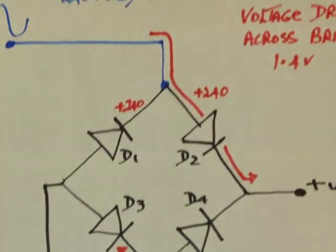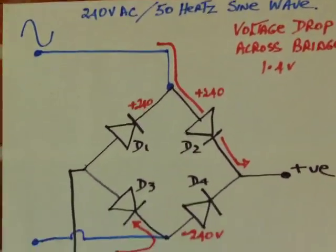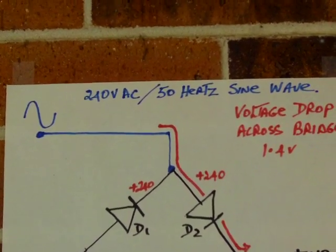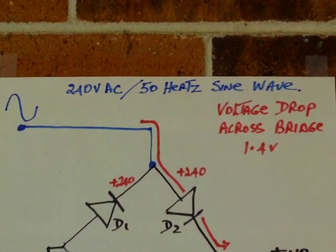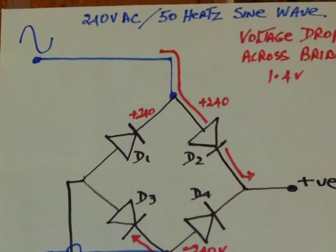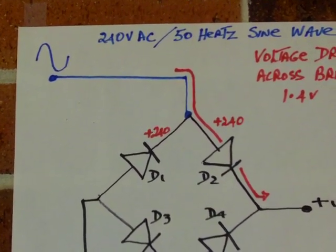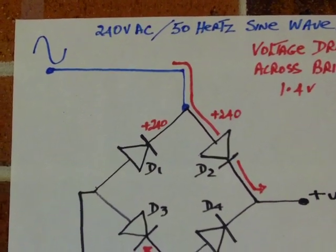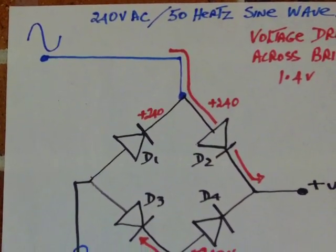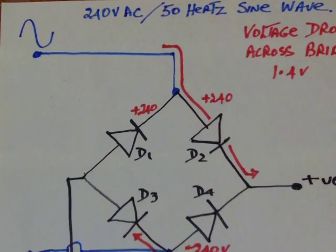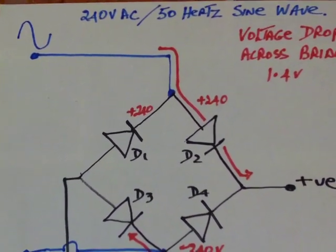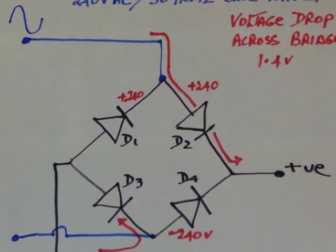To amplify that, we look at a bridge rectifier. We are assuming we have got 240V AC 50Hz sine wave. We have got diode 1, 2, 3 and 4. On the positive half cycle of the sine wave, we have got 240V coming down to the anode of D2. It is in a forward biased condition. It will conduct and the positive will come through that diode to the positive out.